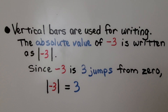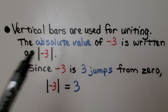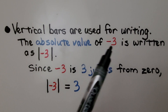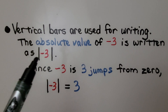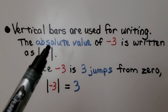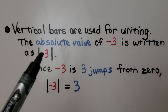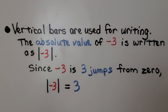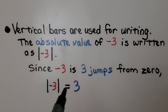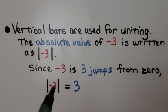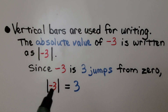Vertical bars are used for writing absolute values. The absolute value of negative three is written as vertical bars with the negative three inside. Since negative three is three jumps from zero, the absolute value of negative three is equal to three. When you see a number inside the vertical bars, that means we need to know how many jumps away it is from zero.